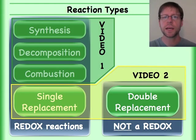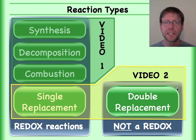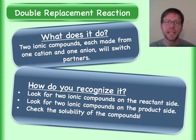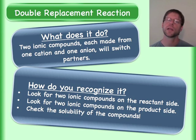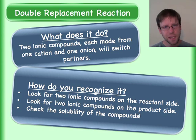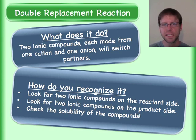Okay, that was single replacement. Now let's look at double replacement — this is the first time for any of these reactions that there will not be any electron transfer and no changing of the oxidation states. What it means is that you're going to have two ionic compounds, each with its own cation and its own anion, and there's going to be a very simple swapping.